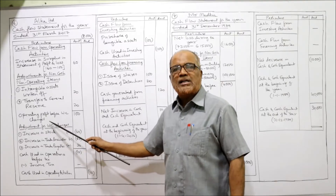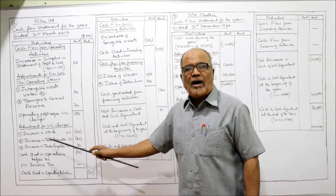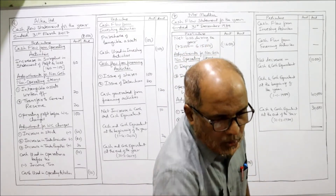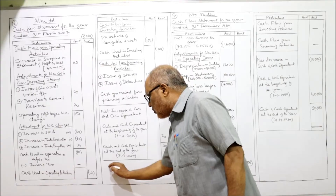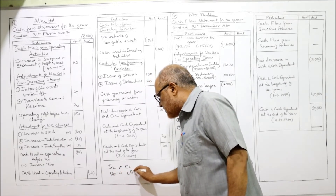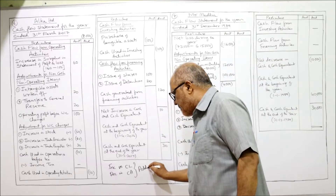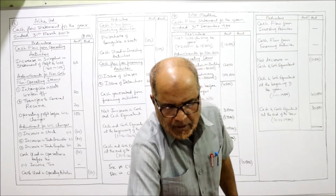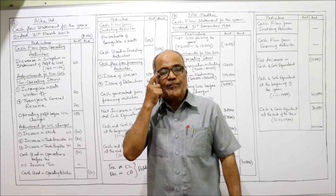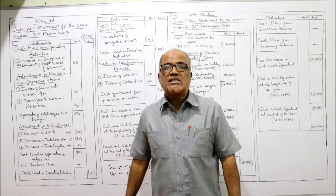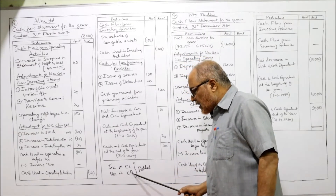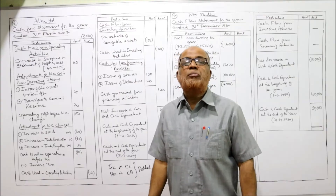Total: 60 plus 20 plus 20 equals 100. This is the operating profit before working capital changes. Now adjustment for working capital changes — we consider current assets and current liabilities. Remember the rule: increase in current liability and decrease in current asset are added. Current assets — inventories: last year 100, current year 160 — increase in inventory, which is a current asset; since it increased, it will be deducted.